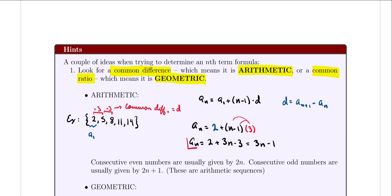We can verify this. If we want the fourth term, we plug in 4: 3 times 4 is 12, minus 1 is 11 — which is exactly what we expected. As we encounter more problems, I definitely recommend that you memorize this formula. It will be very useful.